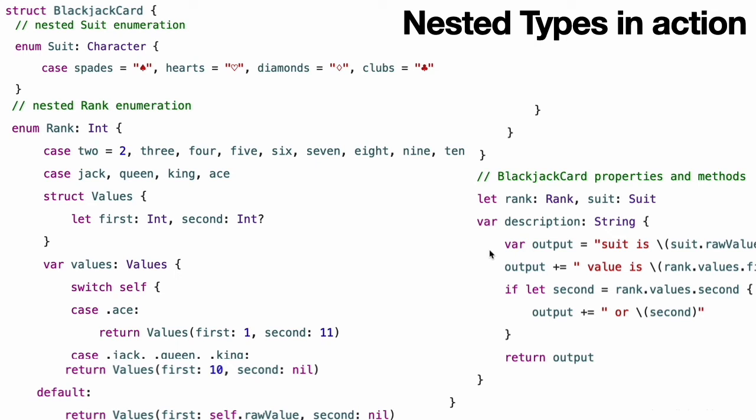The Description property uses optional binding to check whether there is a second value to display, and if so, inserts additional description detail for that second value.